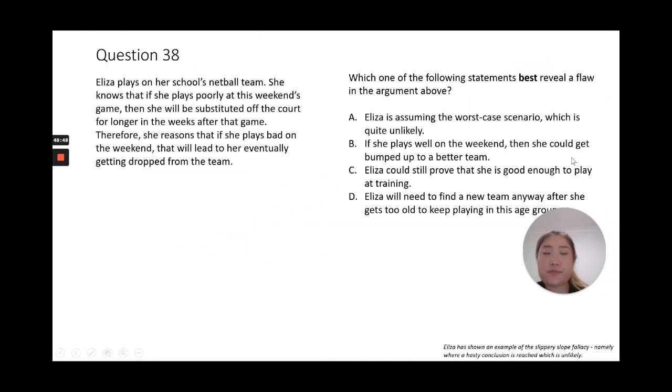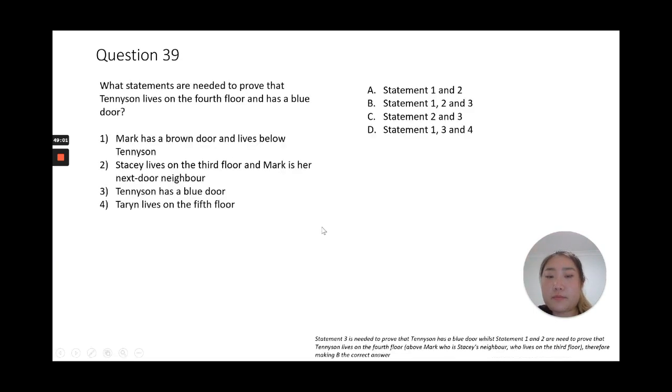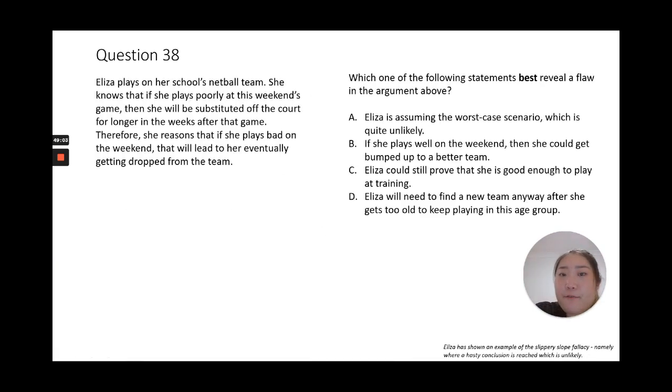Nearly at the end now. Question 38: which one represents the best flaw in the argument? Let's think about the argument first. What is the argument? When I highlight it, we see: therefore she reasons that if she plays bad on the weekend that will lead to her eventually getting dropped from the team. So she's saying that this comes from her decision or her argument that if she plays poorly she will be substituted off court.